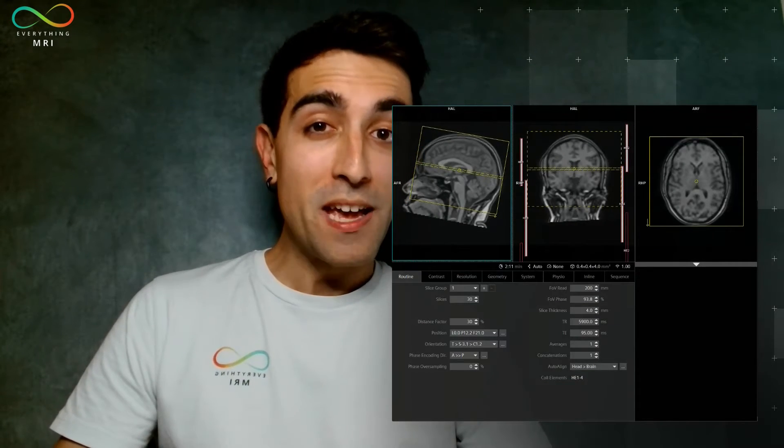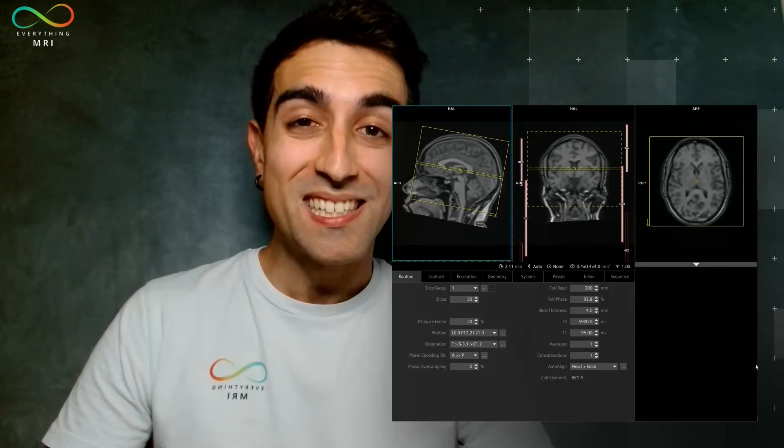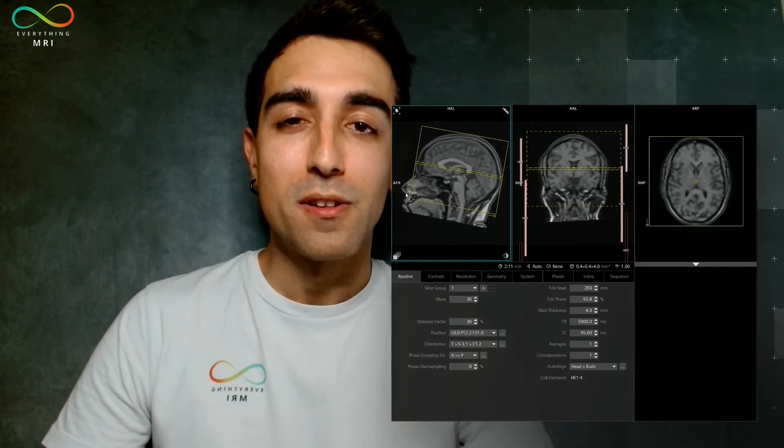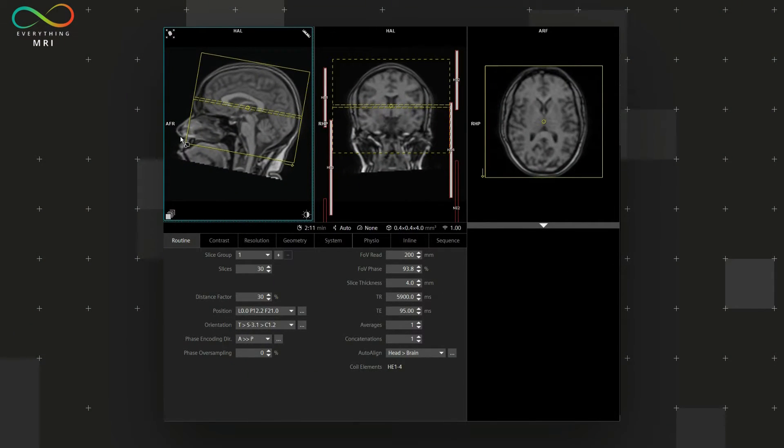Let's showcase now an example on our MR scanner to understand a little bit more the role of this parameter. So there you go, you can see that at the moment in the anterior edge of our FOV in the sagittal plane, we are excluding the nose from the brain anatomy. Now we are actually working with a phase encoding direction that is AP.